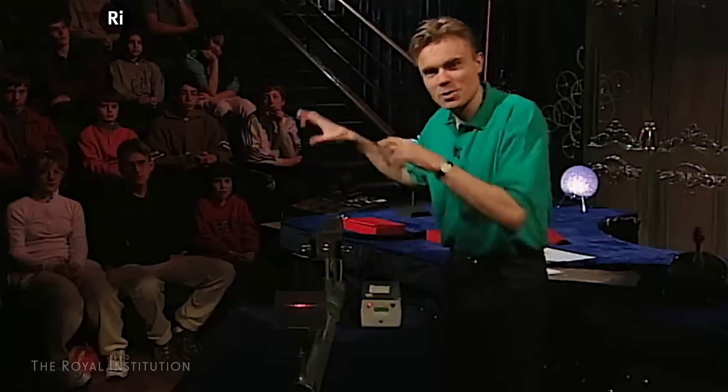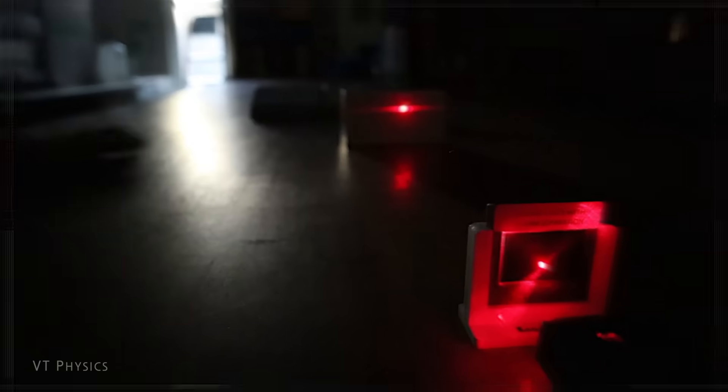My favorite quantum mystery is Young's double slit experiment. I've watched several excellent videos try to explain how the interference pattern is created. All of them leave me shaking my head and wondering, how is that possible?